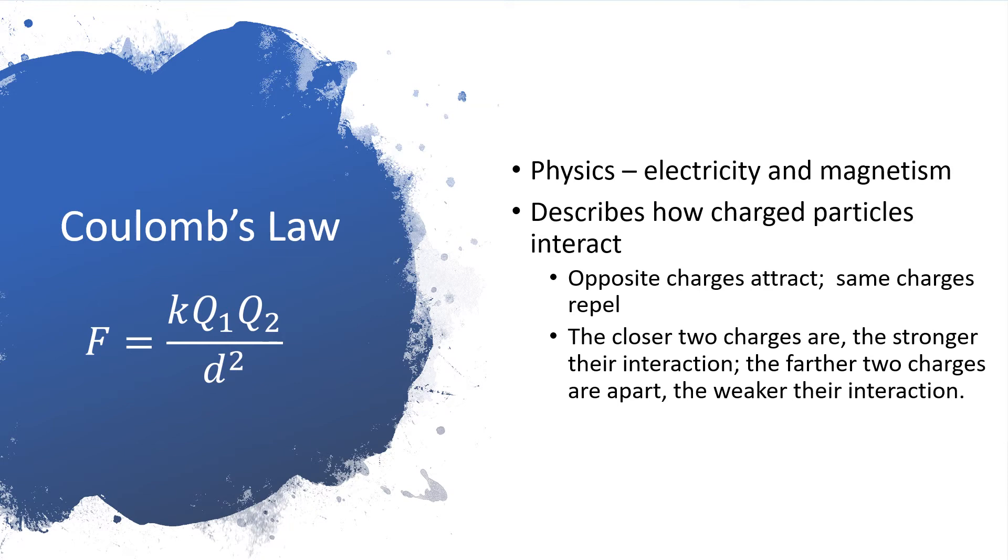The behavior of charged particles is described in physics by Coulomb's law, which is this equation. The F stands for a force. K is a constant. The Qs stand for the charges on the two particles that are interacting. And the D stands for the distance between them.